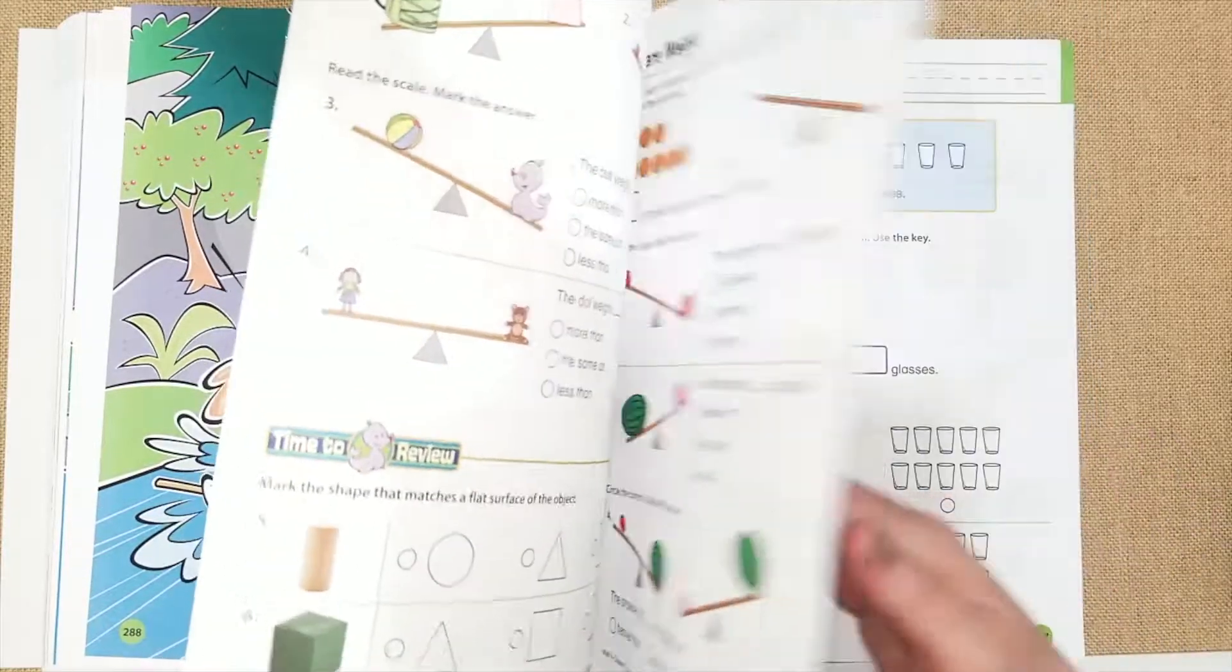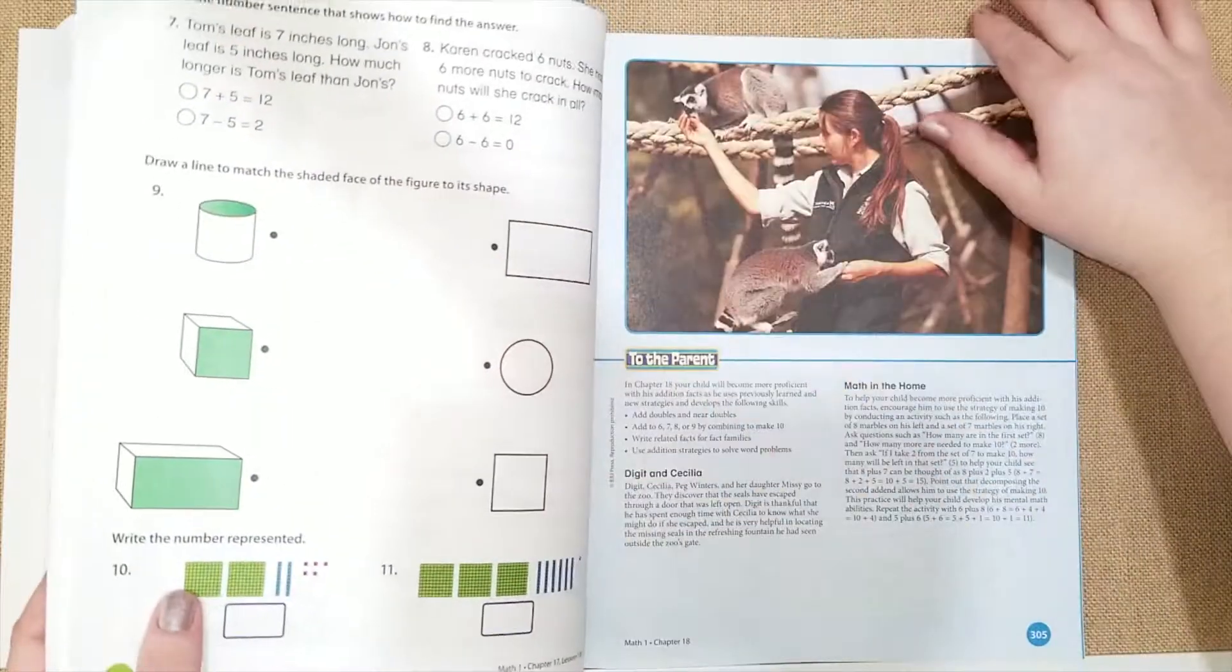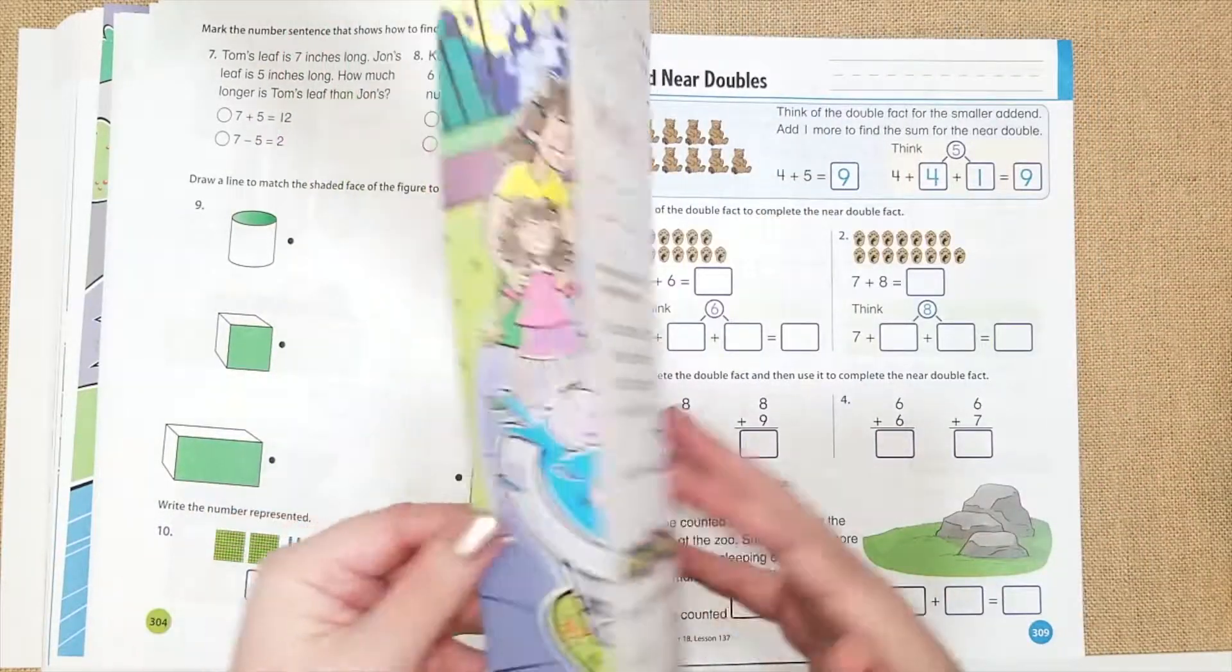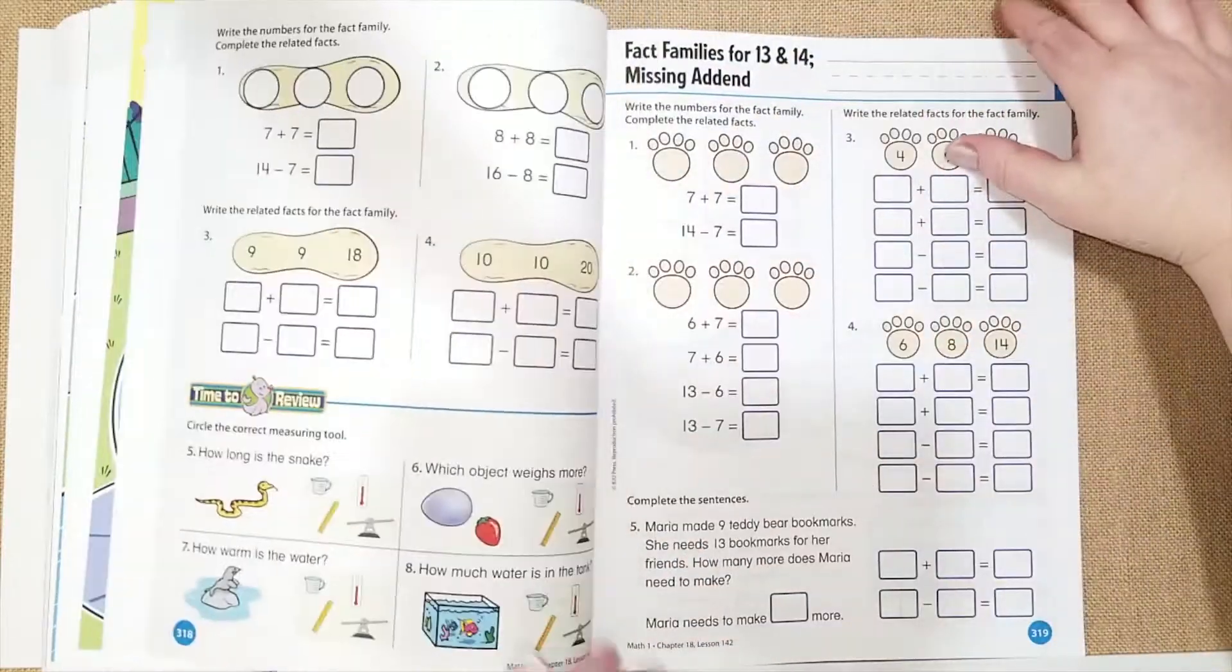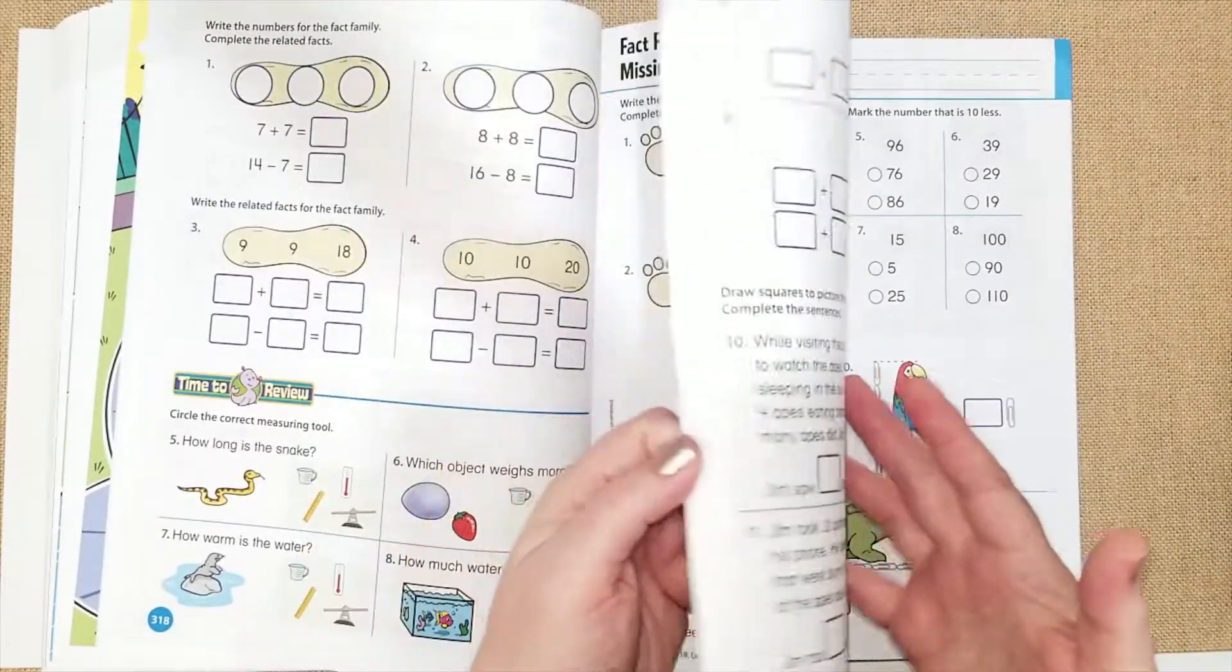They're going to be comparing weights and capacities. And then for chapter 18, they're going to add doubles, fact family doubles, and then they do some reviews.